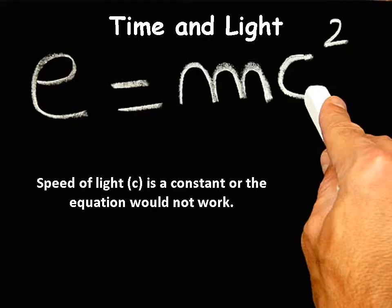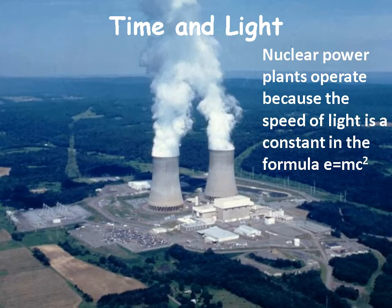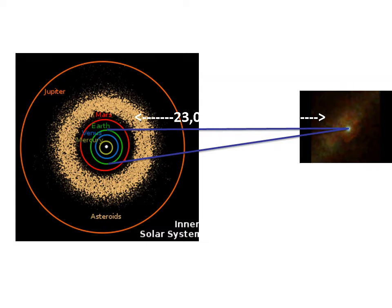Time is also related to light. Light moves at a constant speed — E=mc². The speed of light must be a constant, or the equation would not work. Nuclear power plants only operate because the speed of light is constant in that formula. There are those who play with the laws of physics to try to interpret geologic evidence as supporting a young Earth with 24-hour days, but the laws of physics, including E=mc², just don't support those ideas because the speed of light is constant.